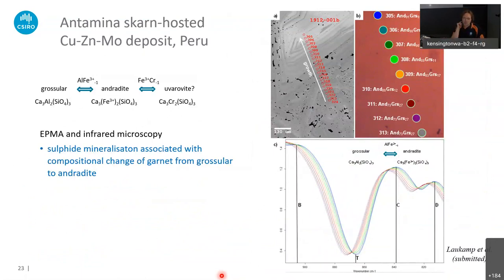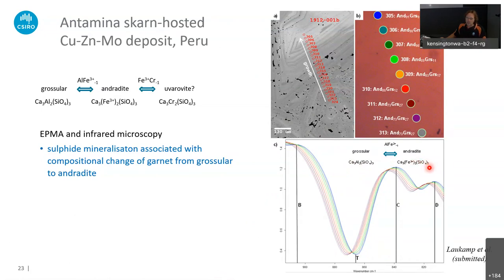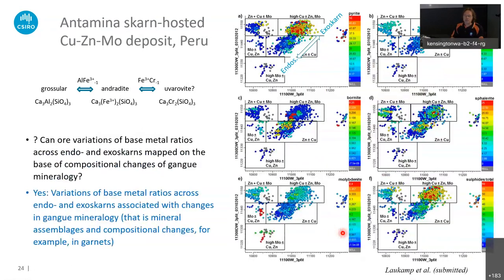I compared microprobe and infrared microscope profiles on the top right of this diagram, and at the bottom the spectral signatures showing how they actually shift from grossular at shorter wavelengths to andradite at longer wavelengths. Going through the aluminum-ferric iron exchange in these calcic garnets, we see a distinct shift of the absorption features. We also notice that only certain garnet compositions are associated with sulfide mineralization — that's very useful. We then mapped that out on a larger scale with lots of HiLogger data.